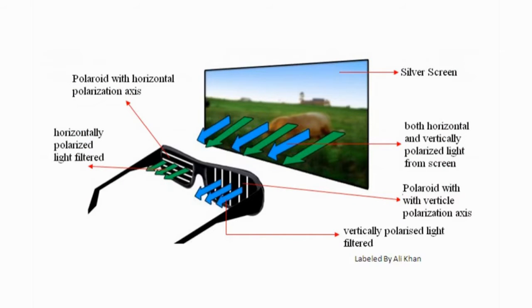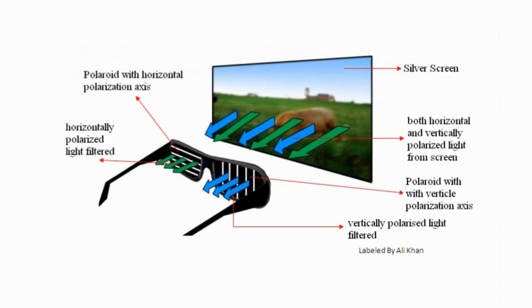Movie theater glasses work on this idea. When you look at a screen the reason it seems blurry is that two different images are coming to your eye. The glasses you wear have different polarizing filters — one side allows a certain image to that eye, the other side allows a slightly different image, and then your brain pieces it together into a 3D picture.